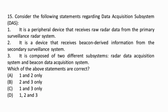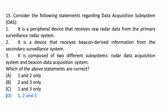Question 15: The data acquisition subsystem is a peripheral device that receives raw radar data from the primary surveillance radar system. It is also a device that receives beacon-derived information from the secondary surveillance system. It is composed of two different subsystems: the radar data acquisition system and the beacon data acquisition system. Thus all three statements are correct.